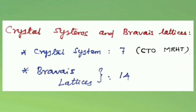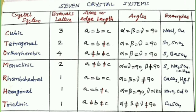The seven crystal systems and their Bravais lattices are: cubic — 3 Bravais lattices (primitive/simple cubic, body-centered cubic, face-centered cubic); tetragonal — 2 Bravais lattices (primitive and body-centered); orthorhombic — 4 Bravais lattices (primitive, body-centered, face-centered, and end-centered).